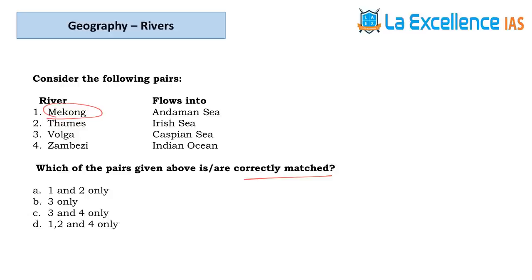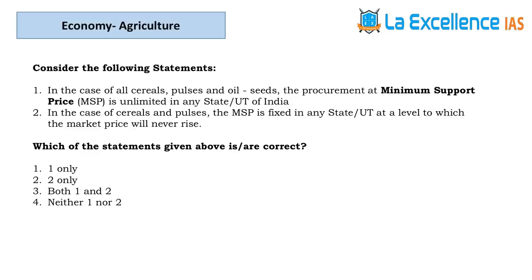The next question is about rivers — if you know where the Mekong is. Mekong flows through China; there is also Mekong-Ganga cooperation. Mekong falls into the South China Sea, so eliminate option A. Volga is a well-known river that drains into the Caspian Sea — statement 3 is correct. Zambezi flows into the Indian Ocean. Answer is C.